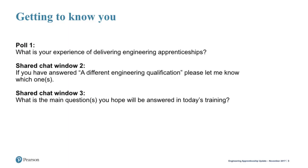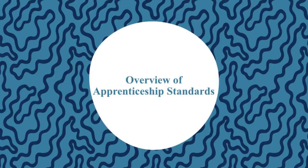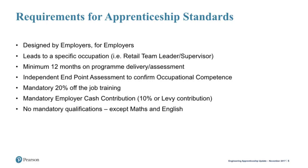The Richards Review set out radical reforms of the English apprenticeship system, similar to the Wolf Report did for classroom-based learning. The outcomes were that current apprenticeships in England weren't fit for purpose, and that employers should have a greater say in what an apprenticeship should consist of. The new apprenticeship standards require employer involvement — designed by employers for employers — and consist of about two to three pages outlining the job role, skills, knowledge, and behaviours required.